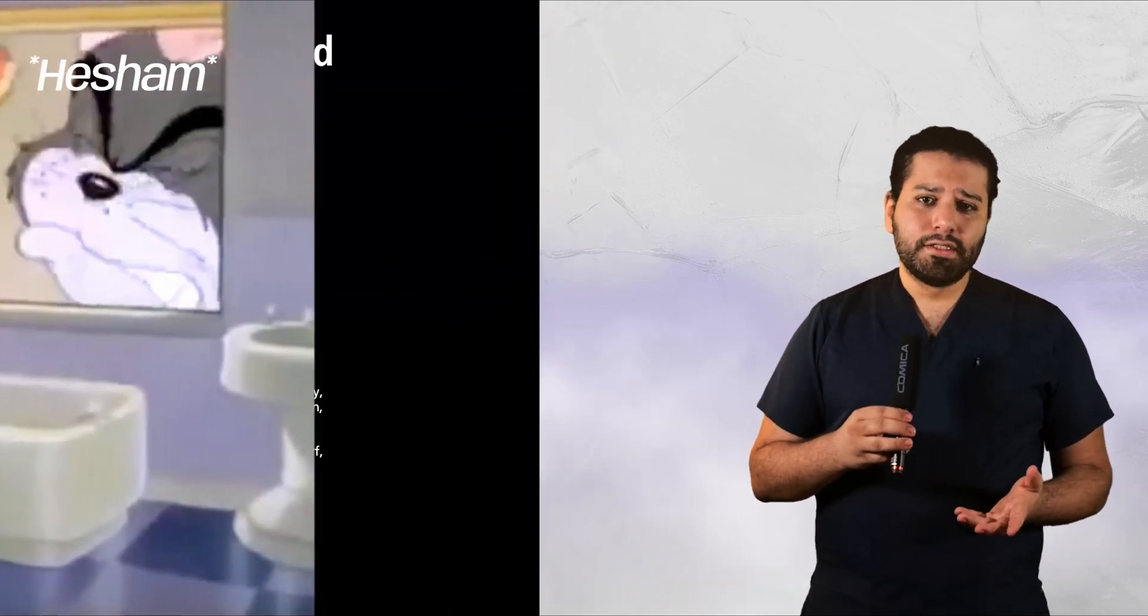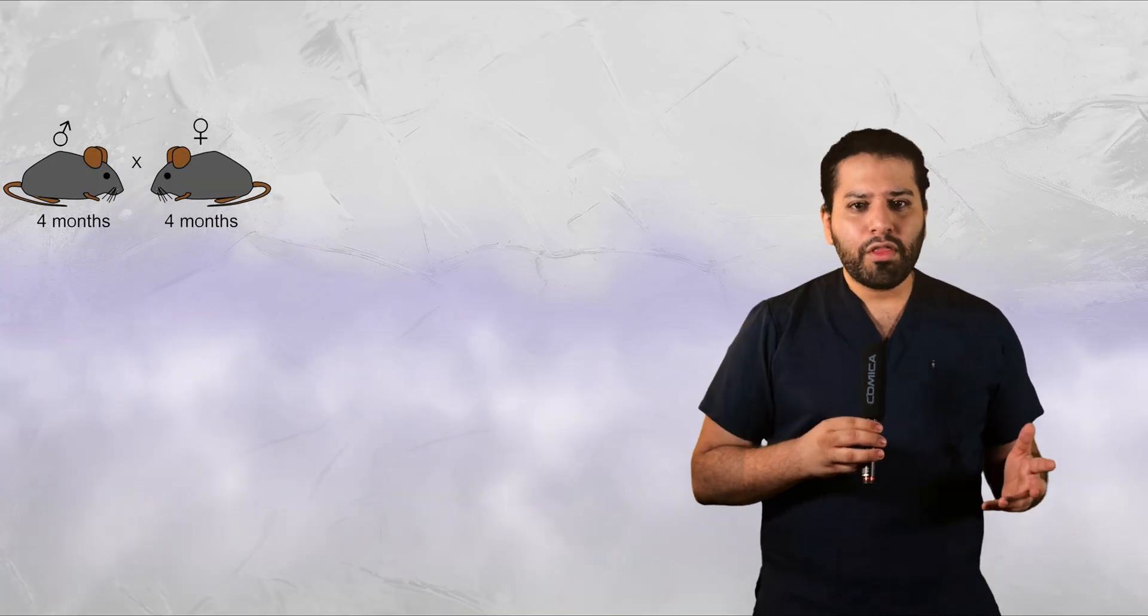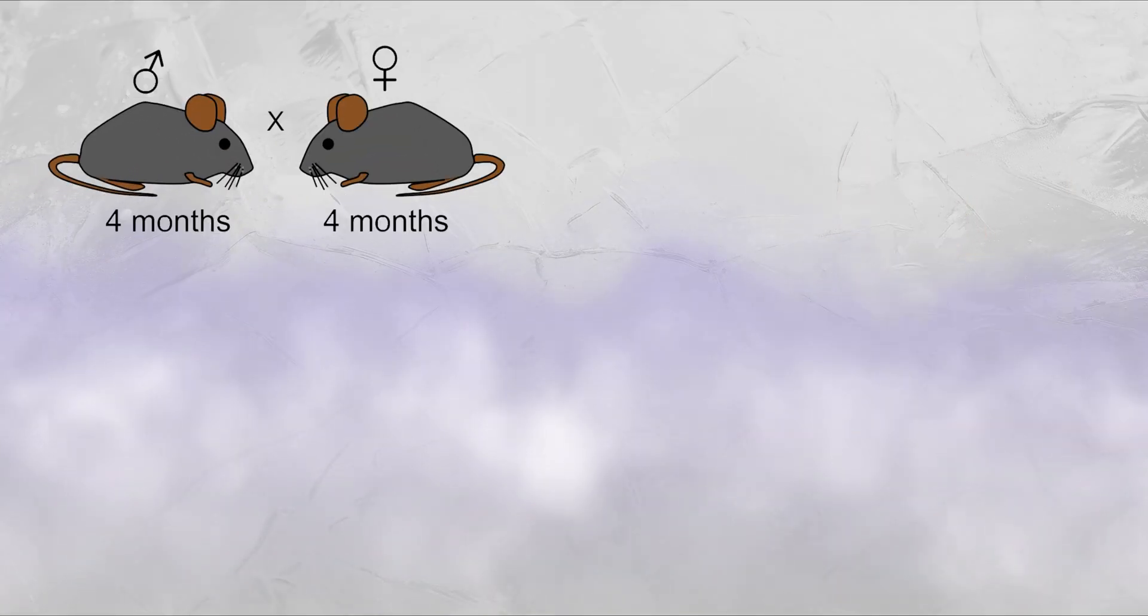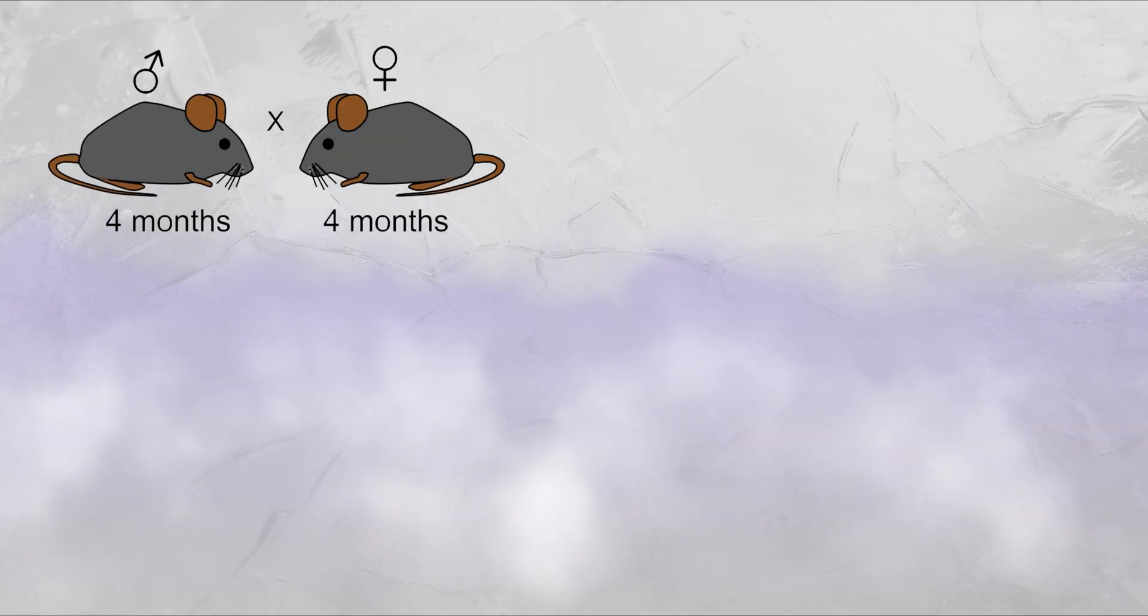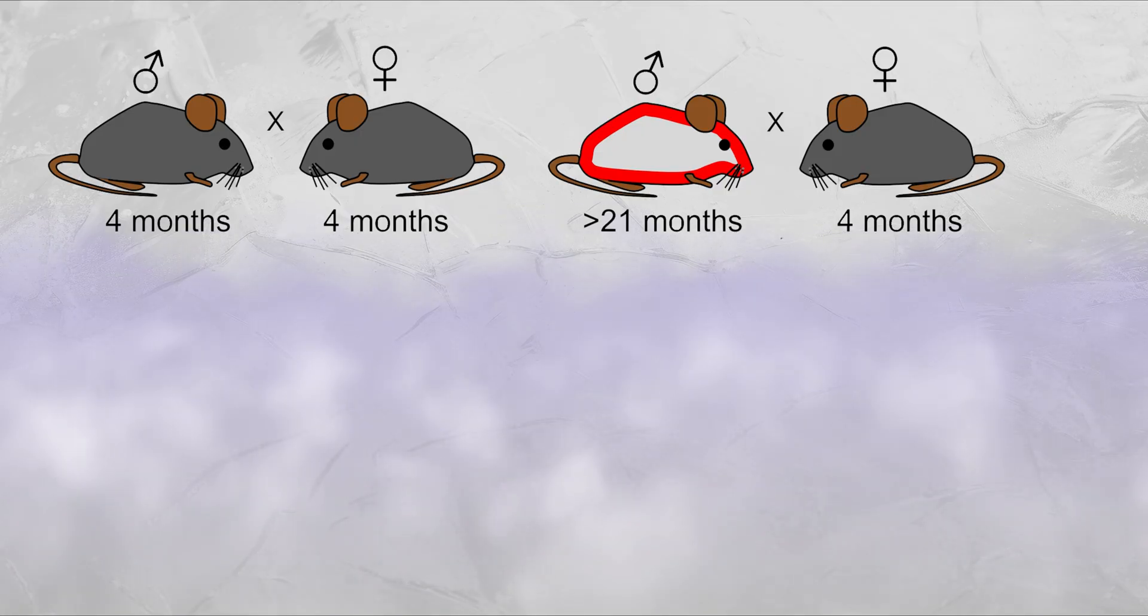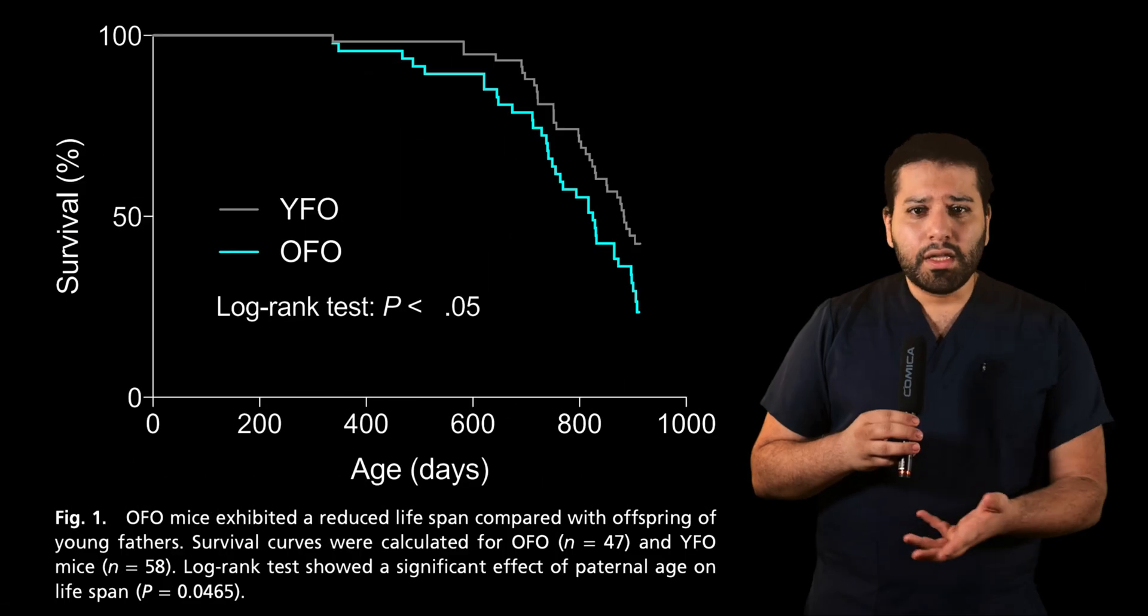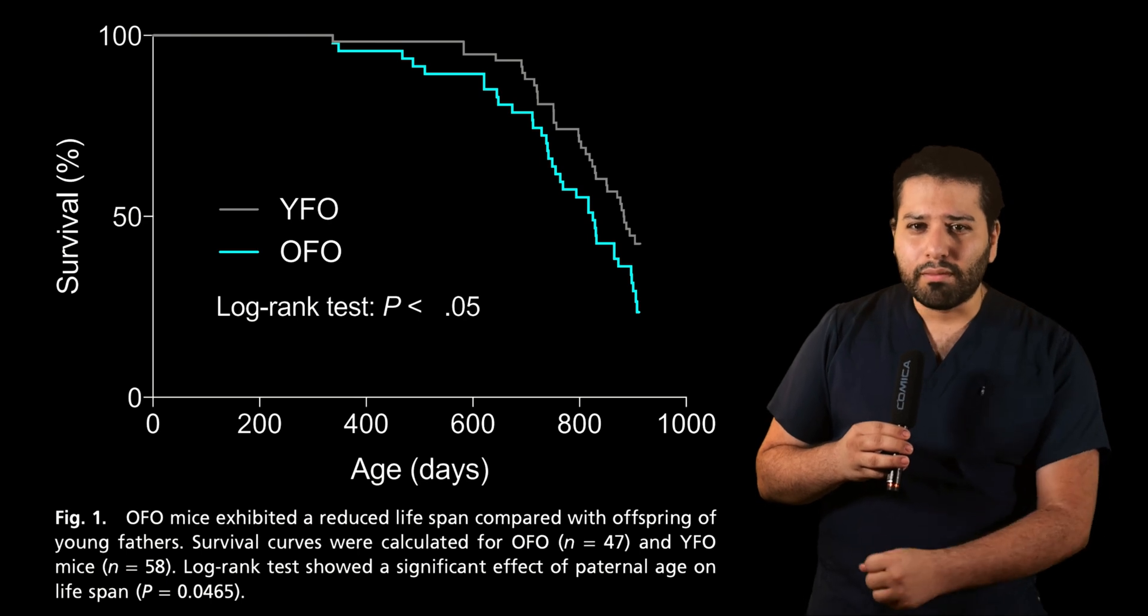In a landmark 2018 study, a team of scientists in Germany bred two sets of mice together. In the first set, a four-month-old female mouse mated with a four-month-old male mouse. In the second set, a similar four-month-old female mouse was bred with a 21-month-old male mouse. And the scientists then compared the baby mice that were produced from the two sets. They very quickly realized that the mice that were fathered by the older male mouse died earlier.